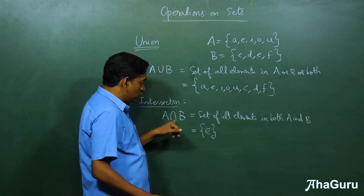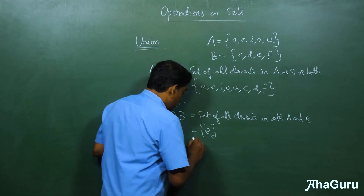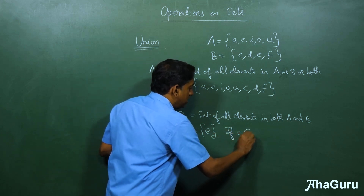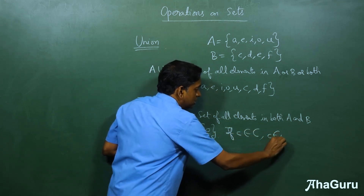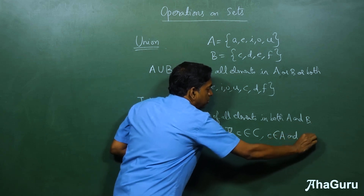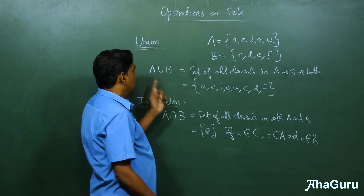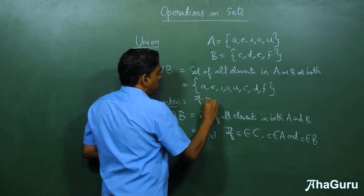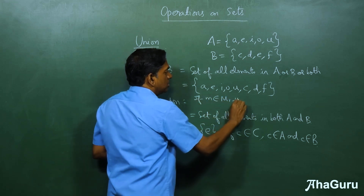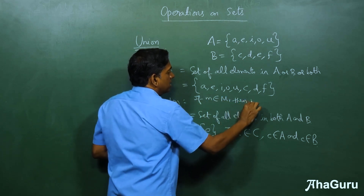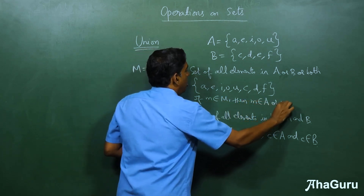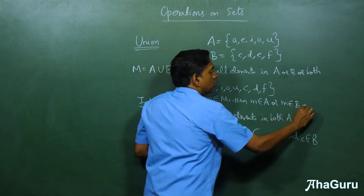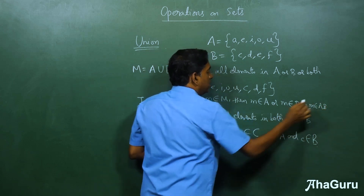That means for something to be in the intersection — let's say C is A intersection B — if small c belongs to C, then small c belongs to A and small c belongs to B. For union, if M belongs to the union, then M belongs to A or M belongs to B or both.